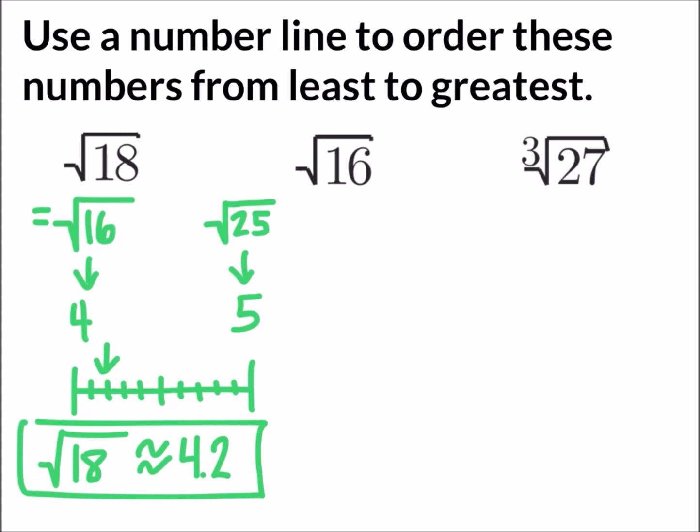The square root of 16 is the second number, and we know that to be a whole number, an exact number. The square root of 16 equals 4.